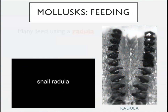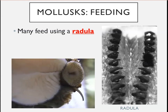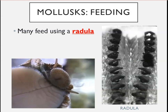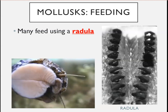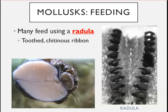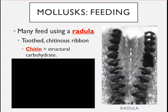Mollusks often feed via a radula — a long ribbon with chitinous teeth. In the video, a snail uses its radula to scrape against a surface, collecting algae, protists, or bacteria and moving them to the stomach. Think of it as a tongue with teeth. Chitin, a complex polysaccharide found in fungal cell walls, is also found in the radula teeth of mollusks. We'll encounter chitin again with insects and arthropods.